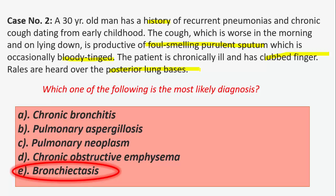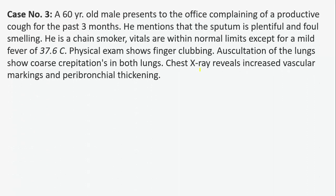Diagnosis is based on history and imaging, usually involving high-resolution CT. Treatment and prevention of acute exacerbations involve antibiotics, drainage of secretions, and management of complications such as superinfections and hemoptysis. Treatment of underlying causes is important whenever possible. Clinical features include chronic cough, dyspnea, fatigue, hemoptysis, recurrent pneumonias, and local crackles, ronchi, or wheezes.